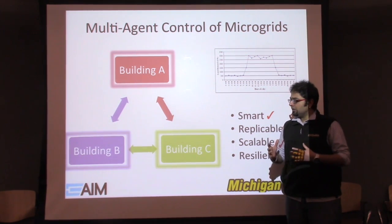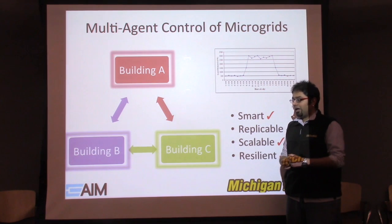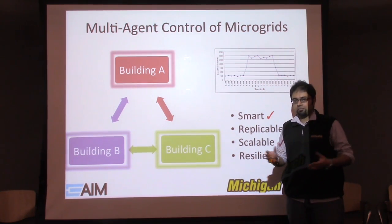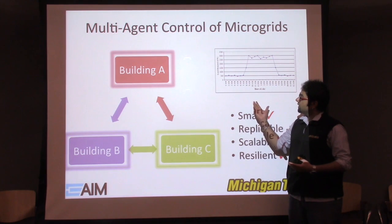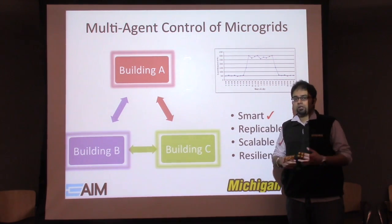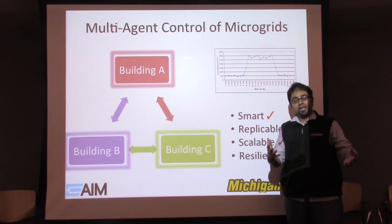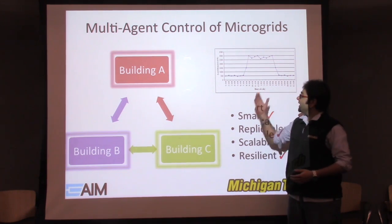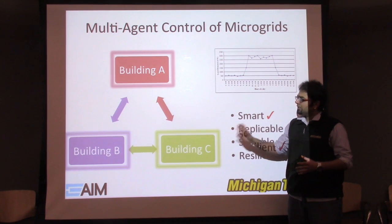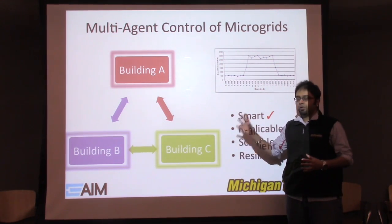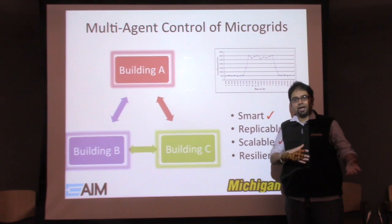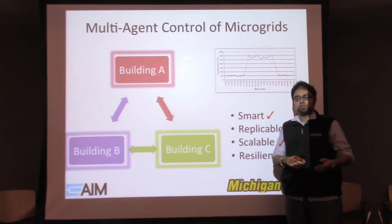Consider the problem at hand. You have three buildings — let's call them buildings on Michigan Tech's campus. Students come in early in the morning and their electricity consumption in the building goes up. People turn on the lights, people turn on heaters. When they leave back in the evening, you have to shut everything in the building down. Let's assume each building has its own generator and its own loads.